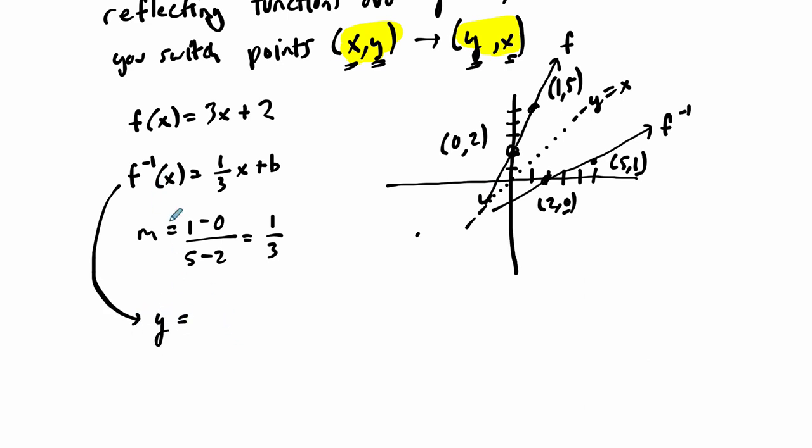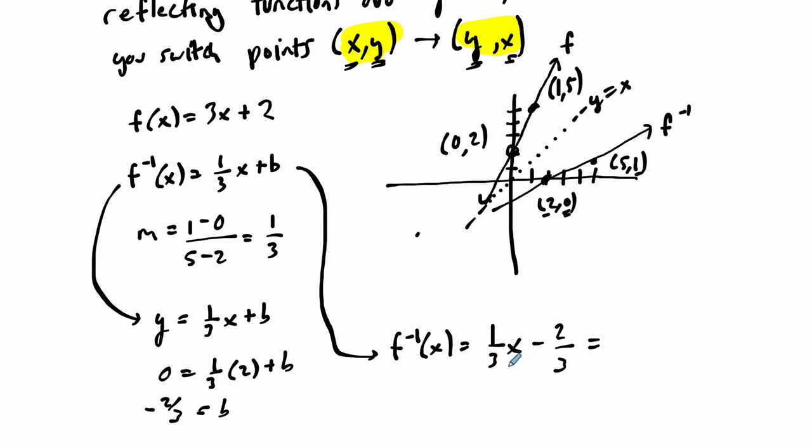So I'm going to just write this over here. y, I'm going to use y for the inverse for the output, is 1 third x plus b. We're going to plug in 2 for x and 0 for y. So 0 equals 1 third of 2 plus b. So it's 2 thirds plus something is 0. That has to be negative 2 thirds. So the inverse function of f is 1 third of x minus 2 thirds. And that's a little confusing. How does that correspond?